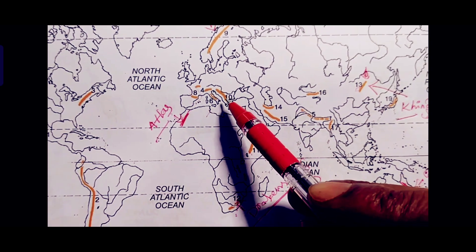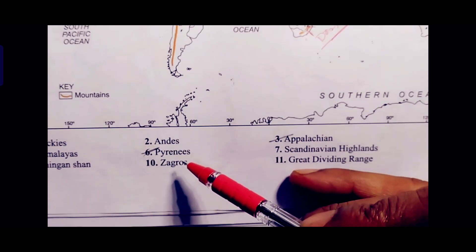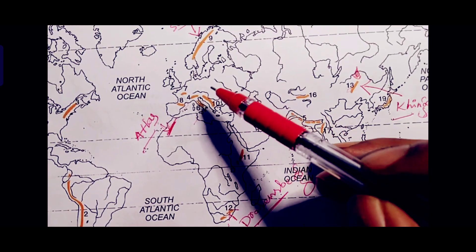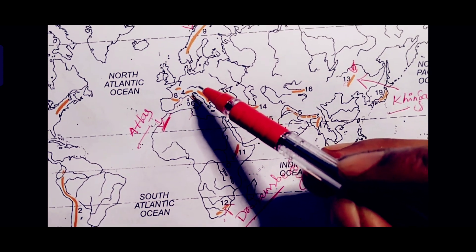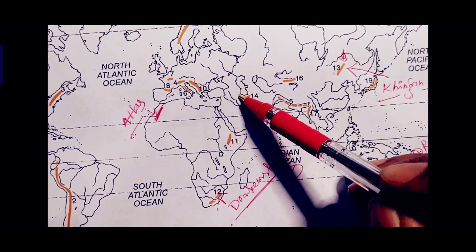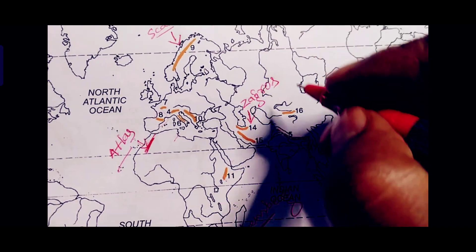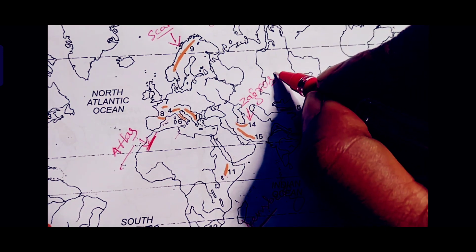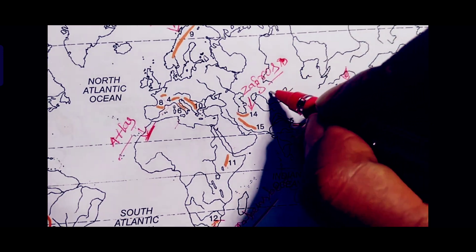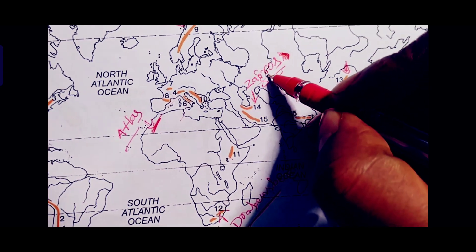Number 10 in the index is the Zagros Mountain. However, Zagros Mountain is not located near the Mediterranean Sea. Number 10 is actually part of mountain number 14, which is located below the Caspian Sea — that is the Zagros Mountain. Draw a line in brown color and label it 'Zagros.' This is the exact location of the Zagros Mountain.